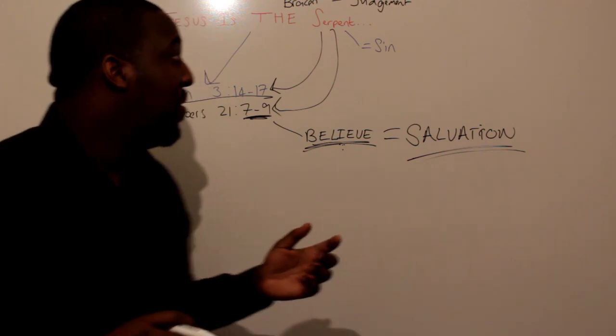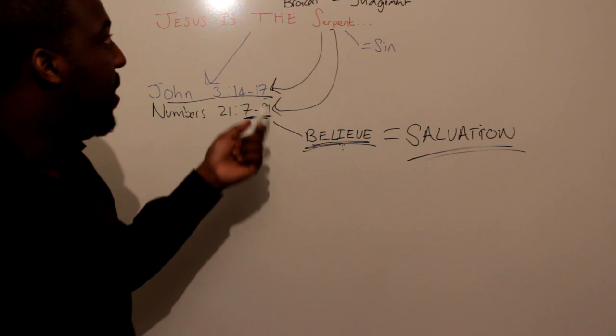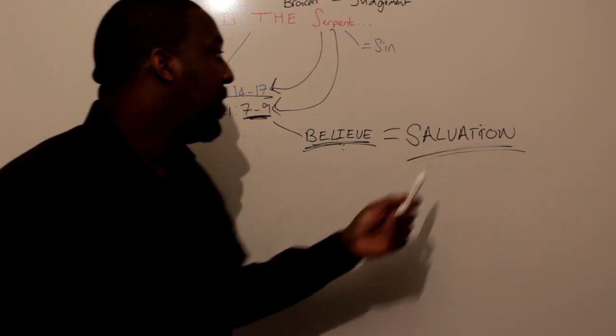This is something that God has literally foreshadowed and set up thousands of years ago here in the book of Numbers when they were still in the wilderness, and they're going to get all the way to when Jesus is born, when he's actually going to fulfill this prophecy.